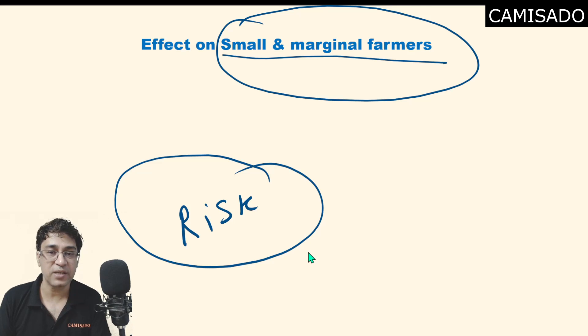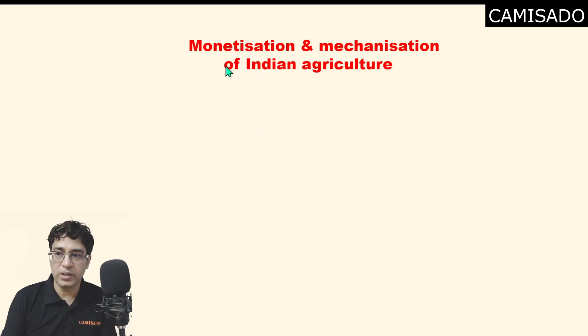Now let us look at the angle of monetization and mechanization of Indian agriculture after the advent of green revolution. Prior to the advent of green revolution, farmers used to use locally produced manures. But after green revolution, farmers started using chemical fertilizers